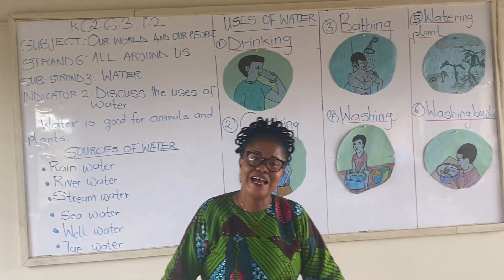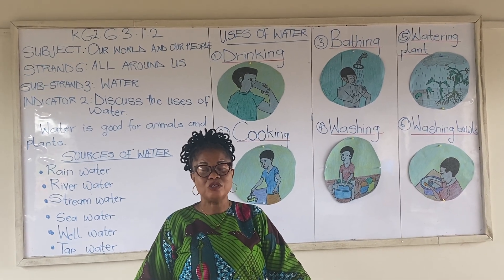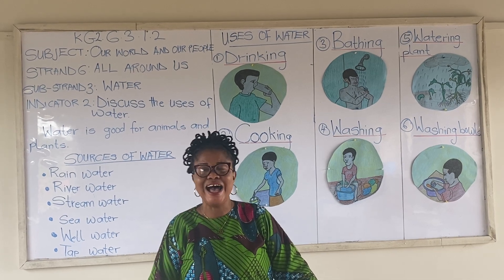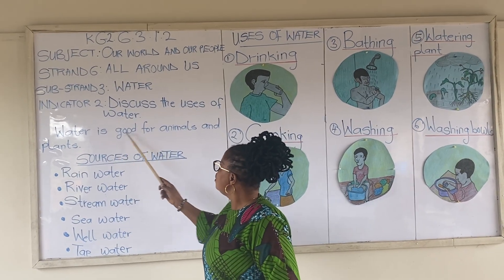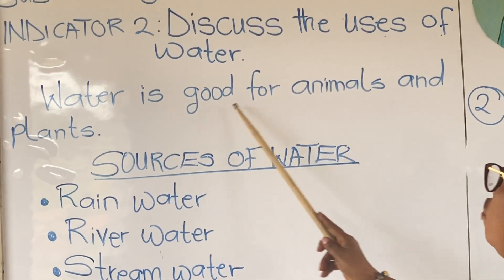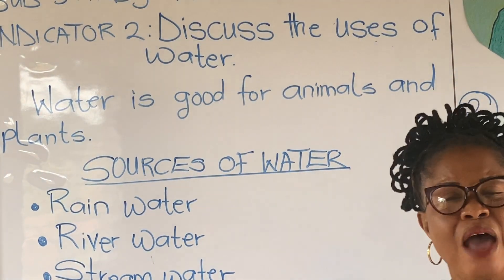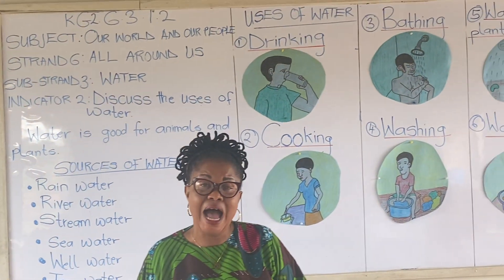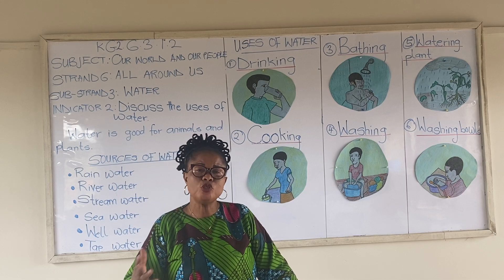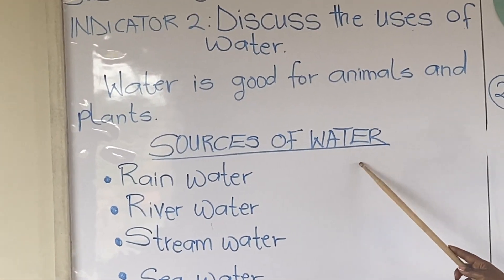In our previous lesson, we discussed about sources of water. We learned that water is good for animals and plants. We also mentioned some sources of water. Let's look at some sources of water.